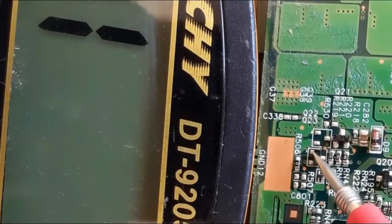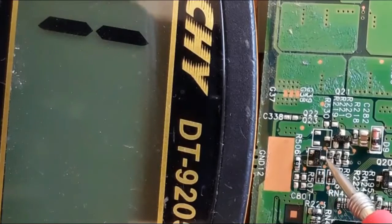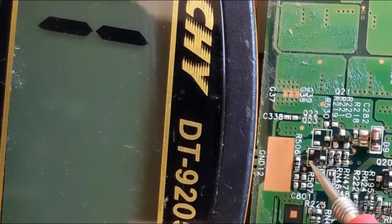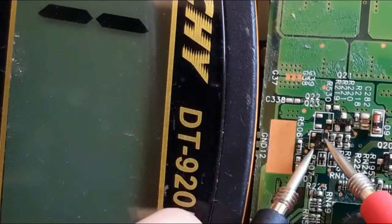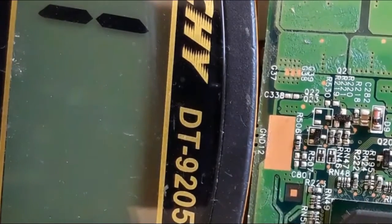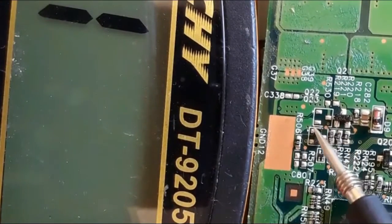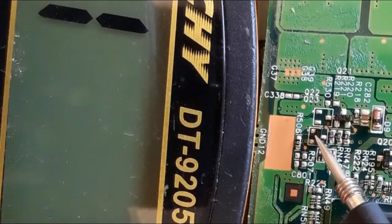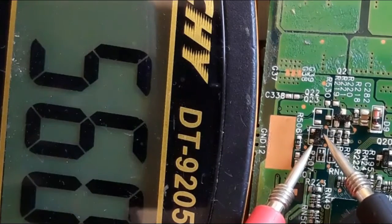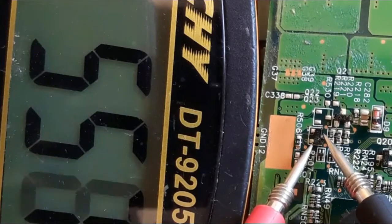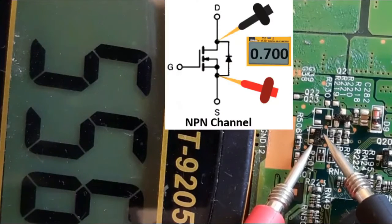Here we have gate, drain, and source. Checking between source and drain: no reading. Swapping the probes, we get a reading — this means it is an NPN MOSFET, because we get a reading with the red probe in the source and the black probe in the drain.